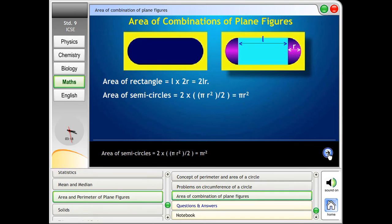Area of semicircles equals 2 into Pi R square by 2, equals Pi R square. Area of figure equals 2LR plus Pi R square.